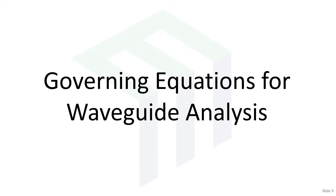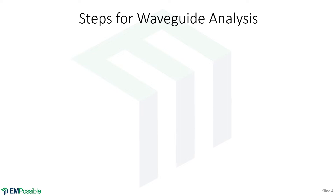Let's start by looking at the basic governing equations for analyzing waveguides. Here are the basic steps. Step one is to draw the waveguide, label the dimensions, collect the material properties, and make sure we know everything there is to know about that waveguide in order to analyze it.